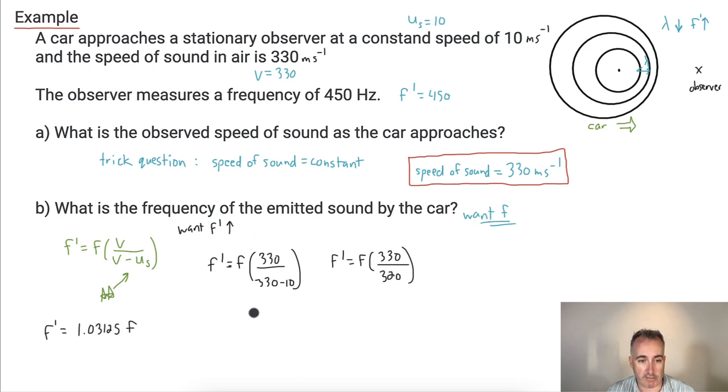Now, if I want to know F then, that means I have F equals, well, it's going to be F prime over 1.03125. And I know F prime. F prime is 450 hertz. So I'm going to say 450 divided by 1.03125.